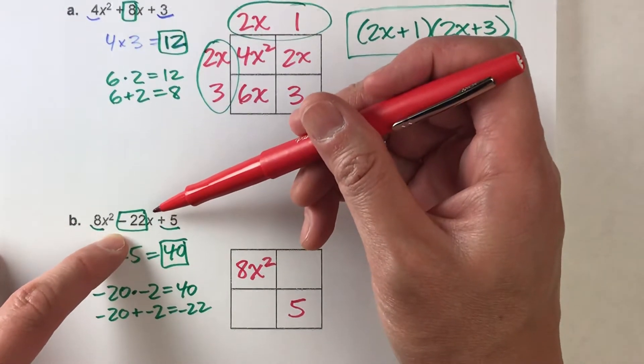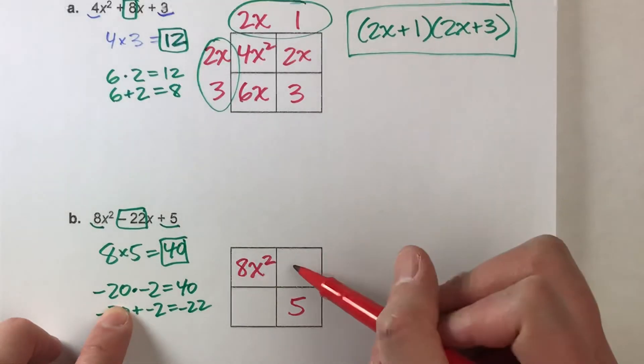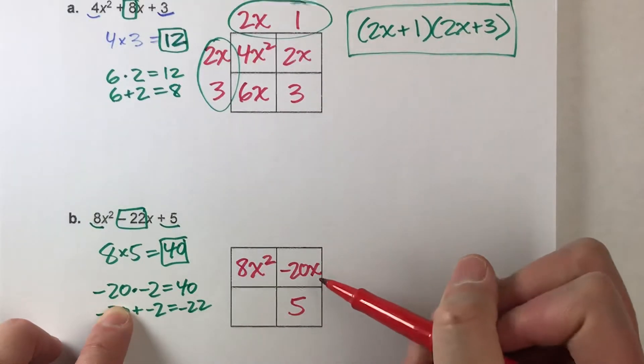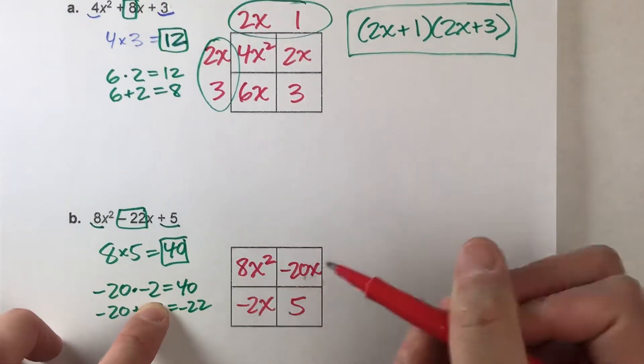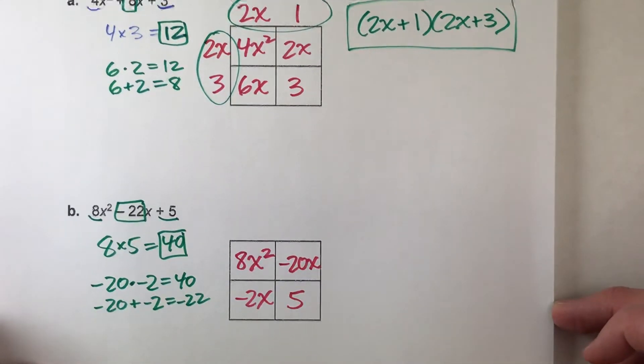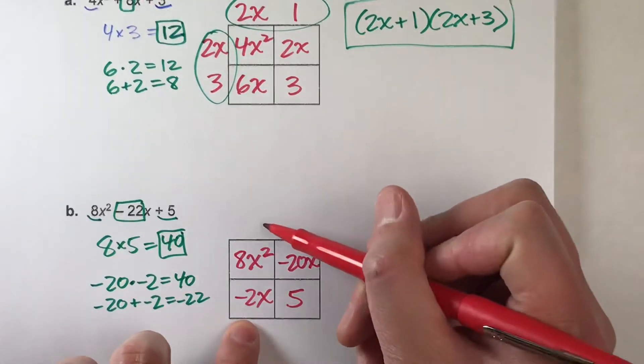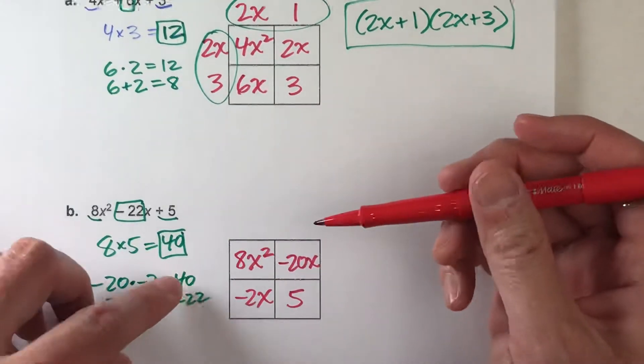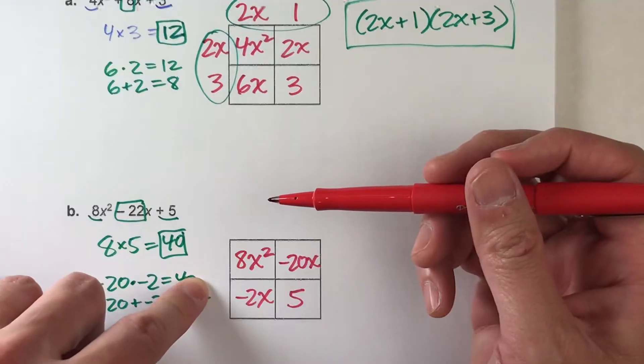So we're going to break up negative 22x as negative 20x and negative 2x. So far, so good. Now, to get our factored form, we need to know the side lengths. So, let's figure out the greatest common factors.